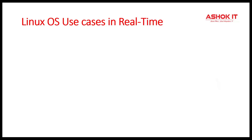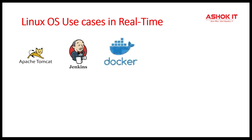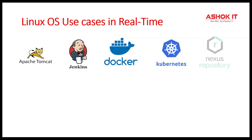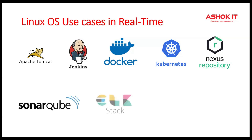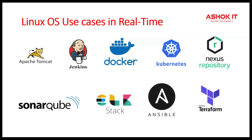First, where we will use Linux operating system in real-time? As part of our project development and operations, we are going to use several tools like Tomcat, Jenkins, Docker, Kubernetes, Nexus, Sonar, ELK Stack, Ansible, and Terraform. All these tools we are going to install on the Linux machine only in real-time. Because of Linux advantages, every company will prefer Linux OS to run the servers, to run the database, and to deploy the application. So if you know Linux operating system, then easily you can work with your project operations.